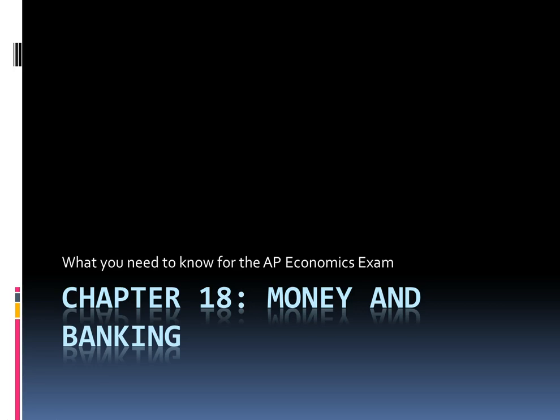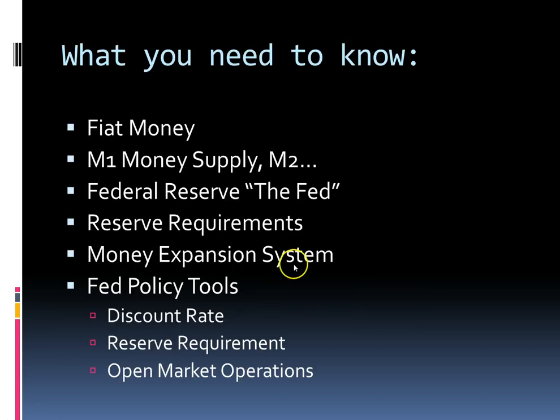Hi, my name is Dylan, and I will be going over Chapter 18 of the Barron's AP Economics book and what you need to know for the AP exam. Here's what you need to know for this chapter: the concept of fiat money, how the money supply of America works, what the Federal Reserve is, what reserve requirements are, how money expands, and the three policy tools of the Fed.